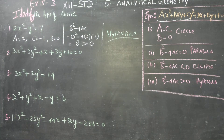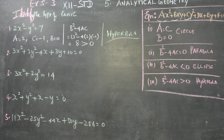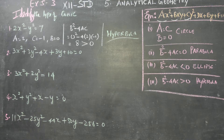First I am identifying what is a, what is b, and what is c. Then, using the formula b squared minus 4ac, since the result is greater than 0, it is a hyperbola.